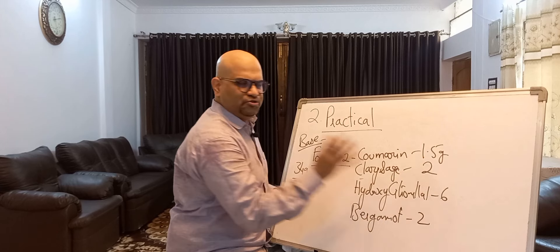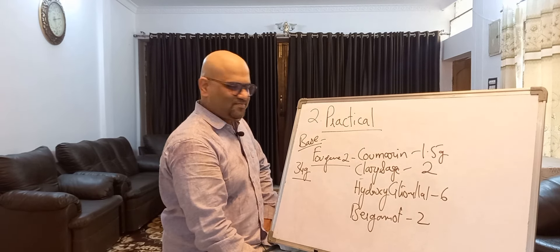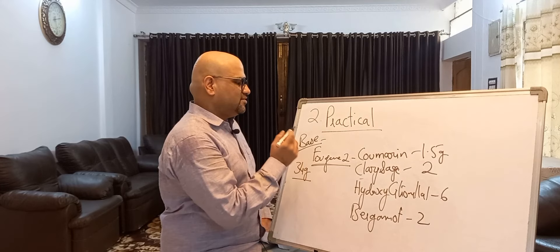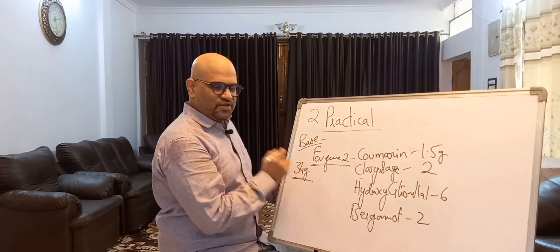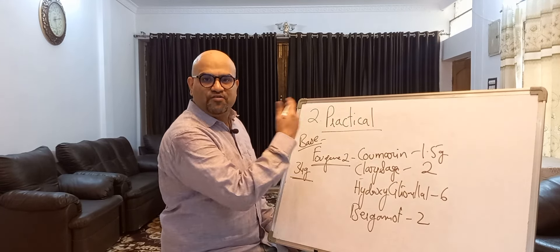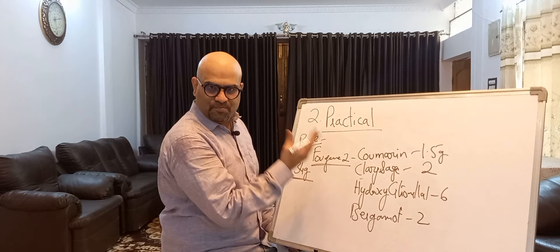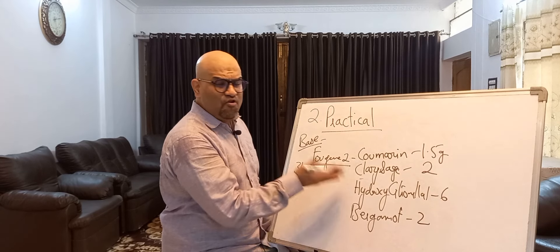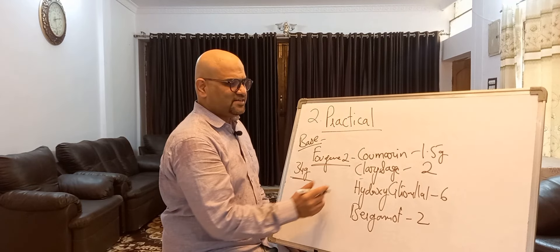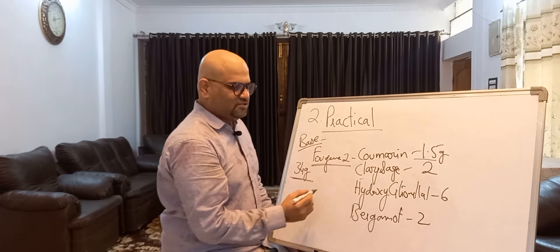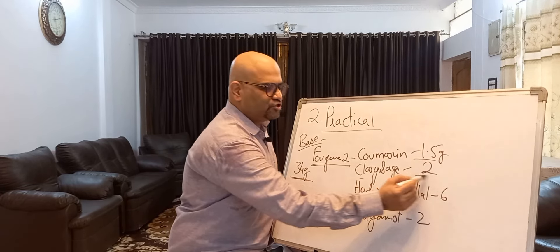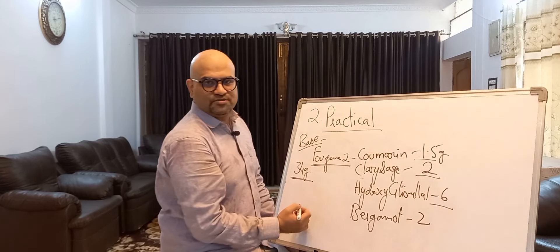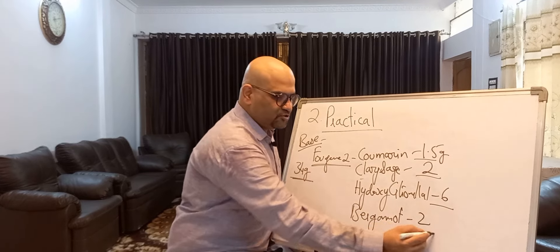For Fougere 2, we are going to use the same base of 34 grams, and we are adding four materials: Coumarin 1.5 grams, Clary Sage oil 2 grams, Hydroxy Citronellal 6 grams, and Bergamot oil 2 grams. The key difference from Fougere 1 is replacing Dihydromyrcenol with Clary Sage oil.